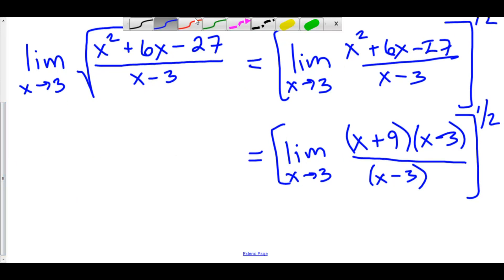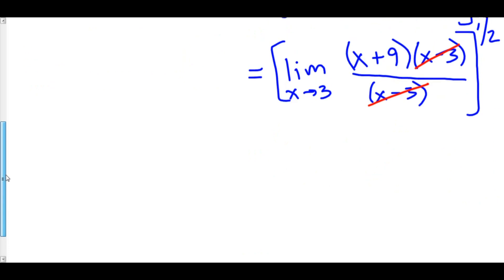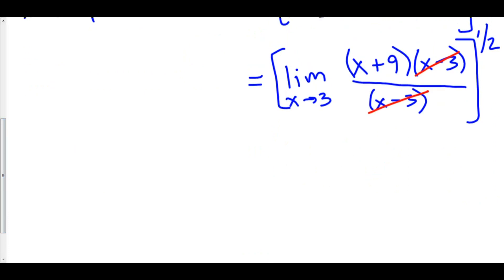So we could cancel out the x minus 3. That means that we have a hole at x equals 3 and therefore we can now take the limit by plugging 3 into our new function. So let's rewrite this now as the limit as x approaches 3 of x plus 9 all raised to the one half power.